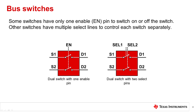In some configurations an entire bus has to be disconnected by a single switch. This can be done with a switch with one enable pin that controls all internal switches of the device. TI offers such switches with up to 32 bits. In other cases each line has to be controlled individually. TI offers such devices with up to 4 bit in industry standard packages. Combinations of both features are available as well.